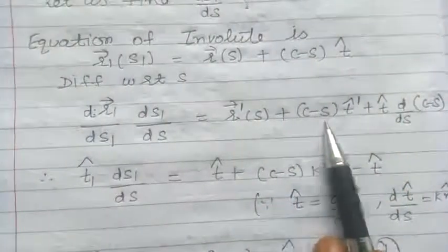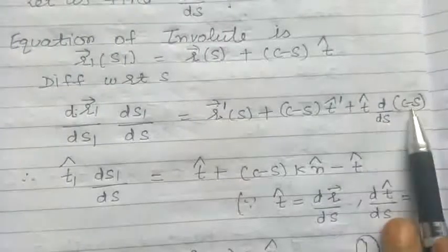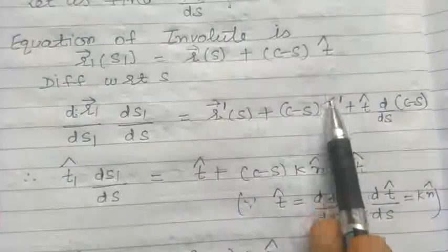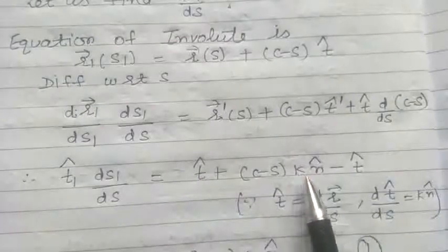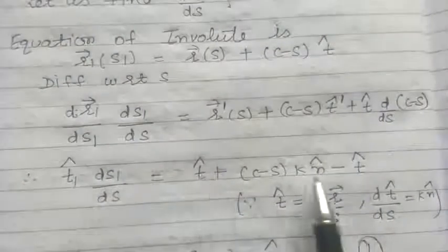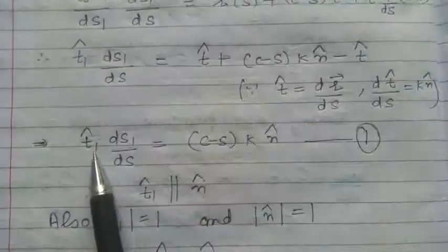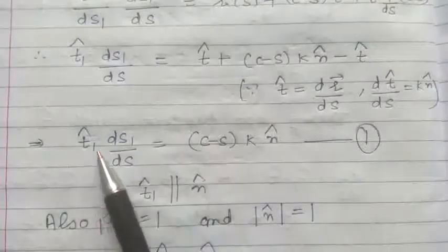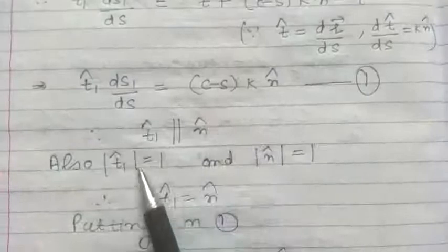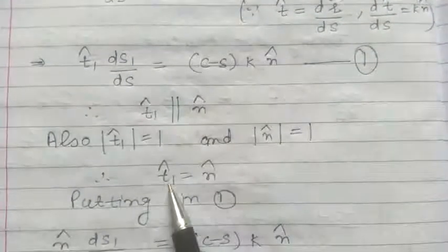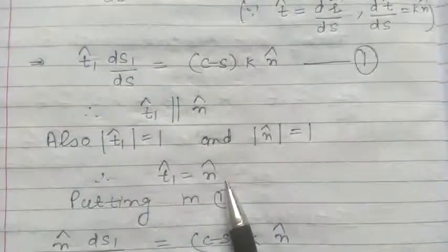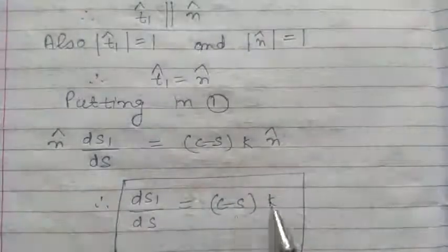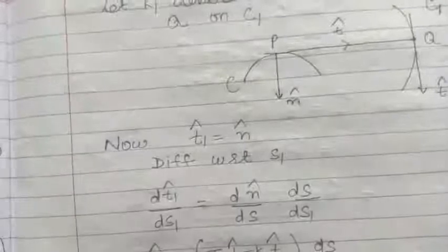Differentiating the involute equation with respect to S: the derivative of R1 is dR1/dS1 times dS1/dS, the derivative of R is R dash, and by the product rule: (C minus S) times the derivative of T cap plus T cap times the derivative of (C minus S). By definition, dR1/dS1 is T1 cap and R dash is T cap. Substituting by the Serret-Frenet formula, T cap dash equals k times N cap, so T cap cancels and we get T1 cap times dS1/dS equals (C minus S) times k times N cap. Since T1 cap and N cap are parallel unit vectors, T1 cap equals N cap, giving us the value of dS1/dS.